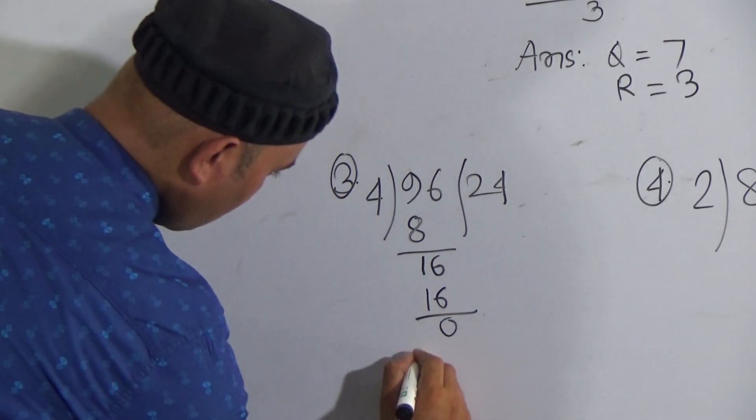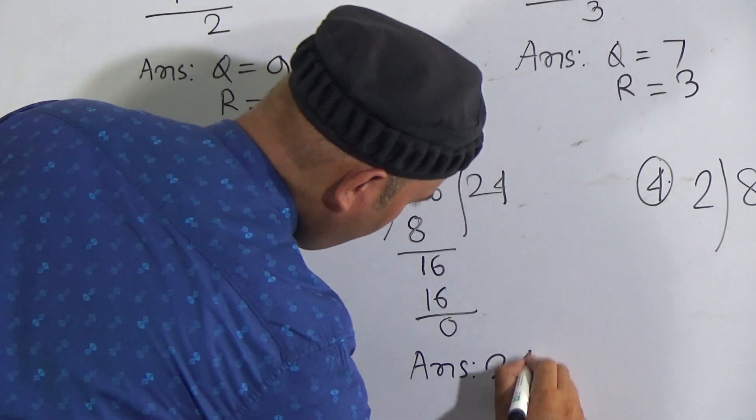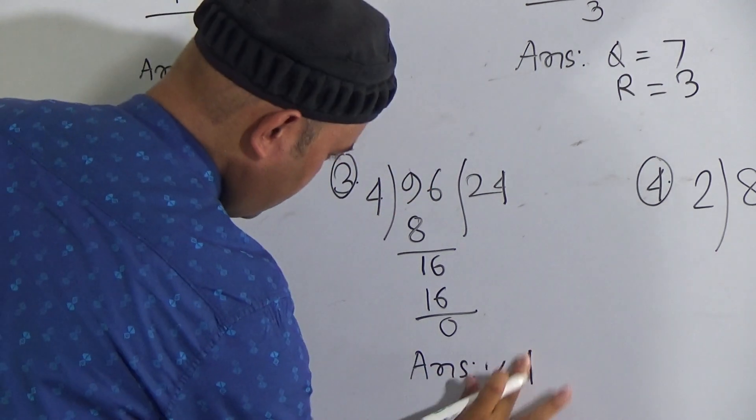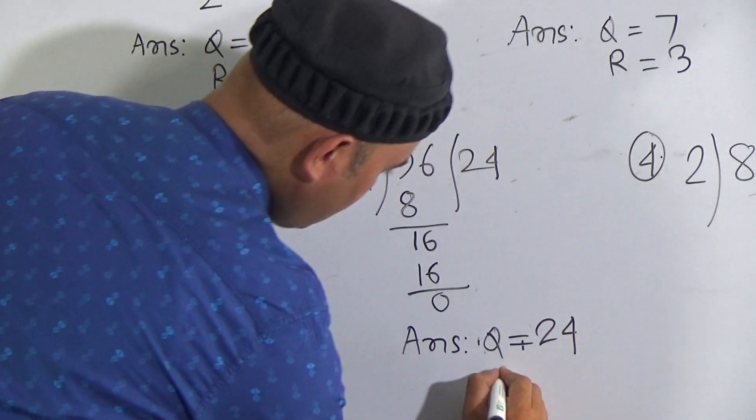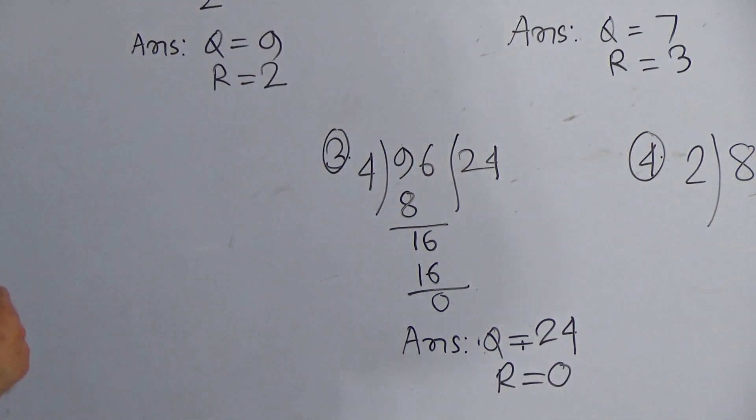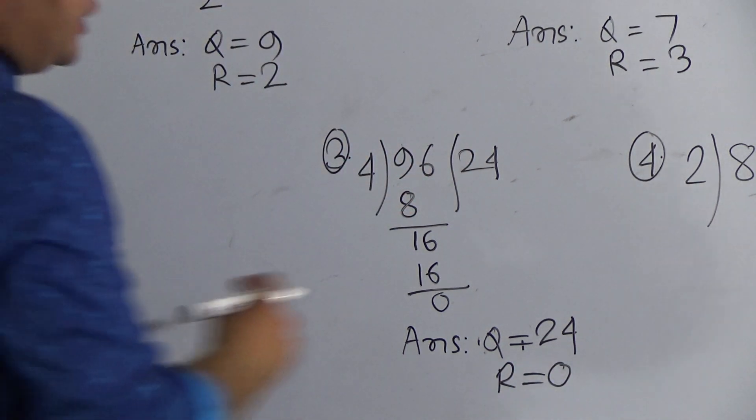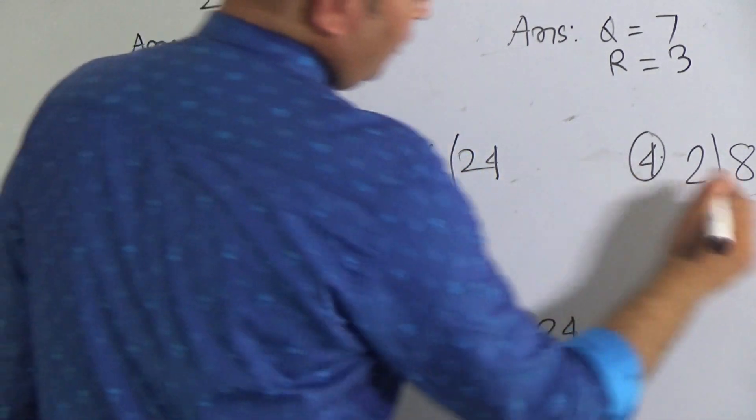So here is answer: quotient is 24 and remainder is 0. My dear students, hope you understood this one. Now the next one, look here, here is 80 divided by 2.